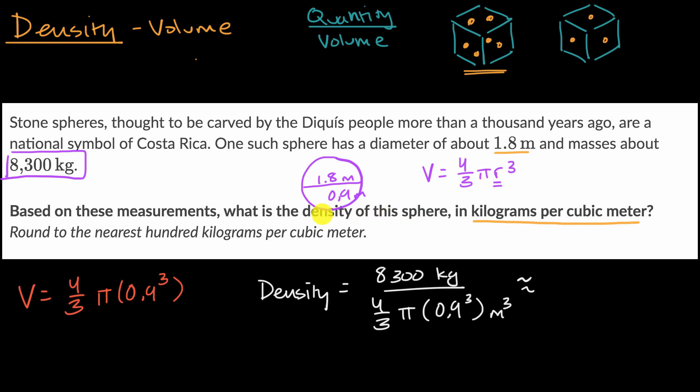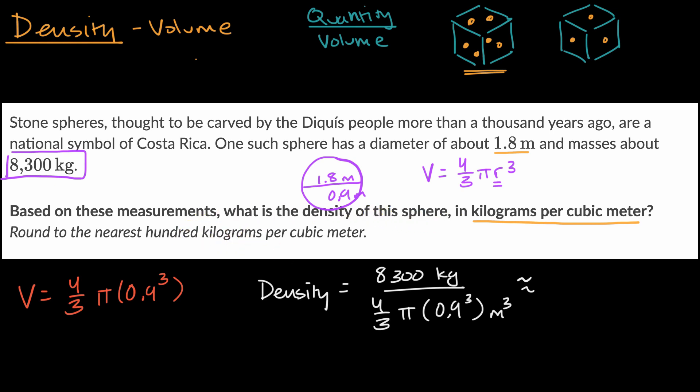So we have 8,300 divided by, and let me just open parentheses here, 4 divided by 3 times π times 0.9 to the 3rd power, and then I'm going to close my parentheses, is equal to this right over here.